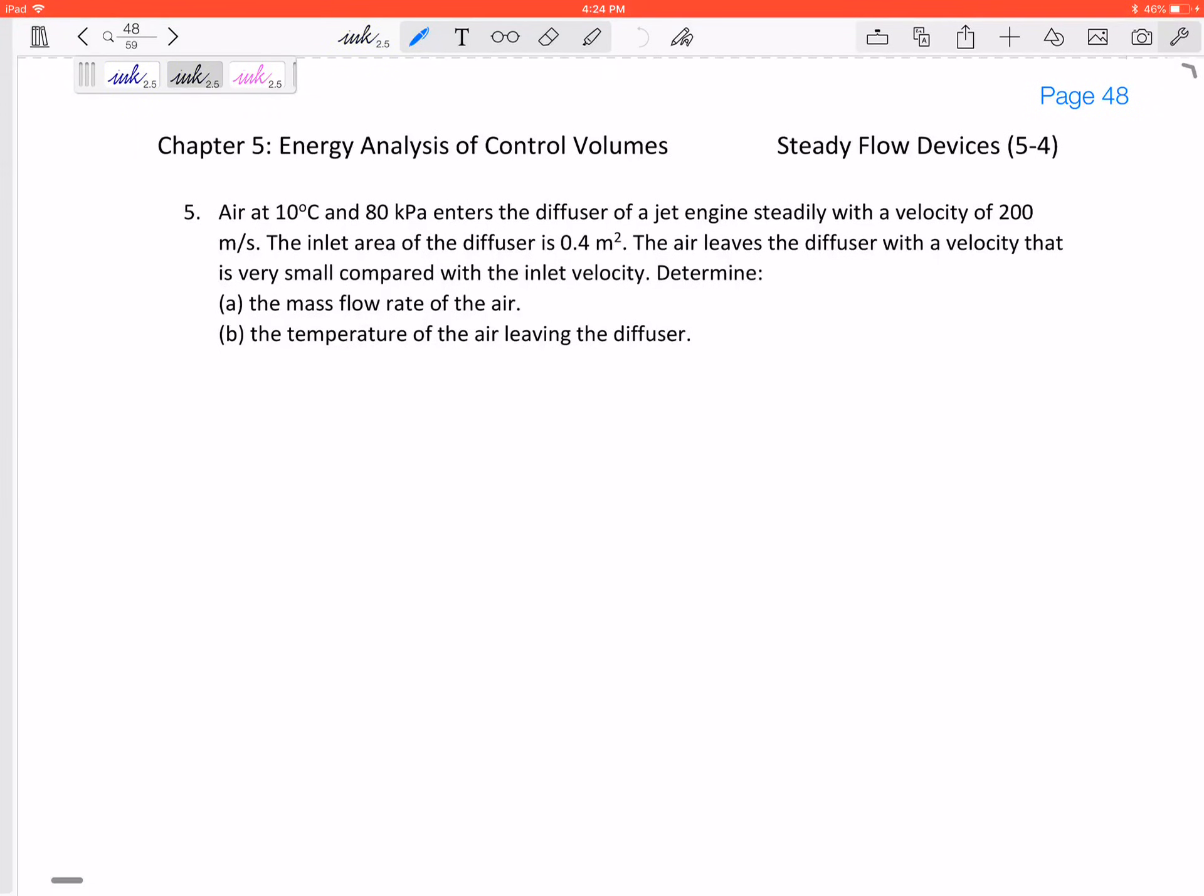Okay, so let's look at this problem in our notes. It's labeled number five in our notes on steady flow devices. It says air at 10 degrees C and 80 kPa enters the diffuser of a jet engine steadily with a velocity of 200 meters per second.